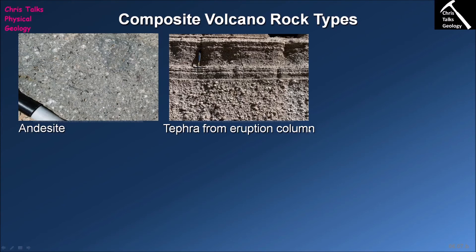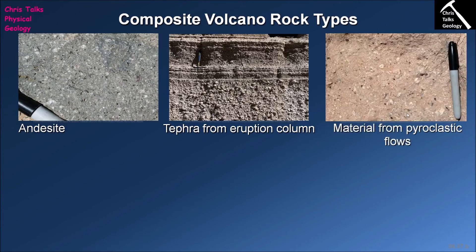Tephra deposits are loosely consolidated and very weak, being just material that rains out of the eruption column and settles on the volcano's sides. We also see pyroclastic deposits — a specific rock type related to the pyroclastic flow itself. As the pyroclastic flow hurls down the sides of the volcano it leaves a layer of pyroclastic material behind. These deposits have a range of clast sizes from fine dust up to pieces below about one centimetre, which is generally smaller than what we find in tephra layers — one way to tell the two apart.